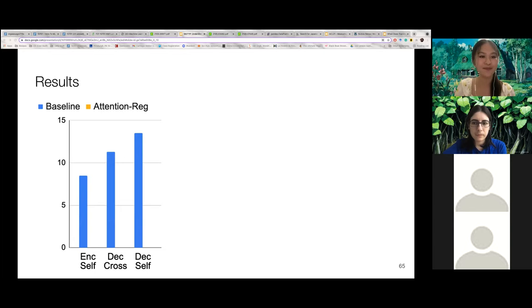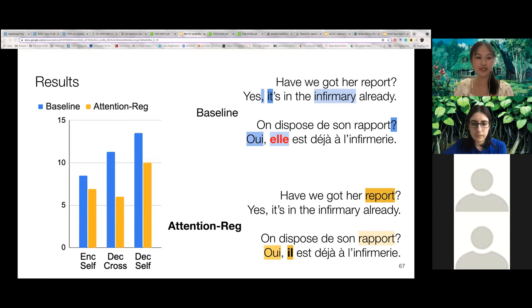We also find better attention alignment with SCAT after attention regularization, which shows that the model is indeed able to learn how to pay attention to the right context. And we can also see that the model with attention regularization assigns higher attention to the words report and rapport from our original example when they are translating the ambiguous pronoun, and then is able to translate the pronoun correctly. So this suggests that attention regularization with SCAT can encourage models to pay the right attention even to unseen examples, and thus allowing them to translate the ambiguous words correctly.